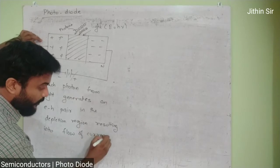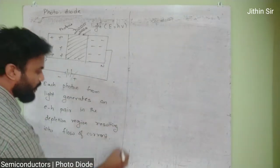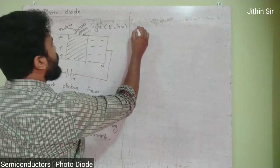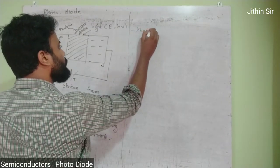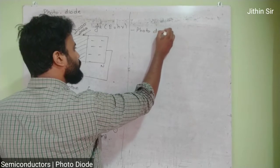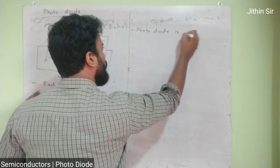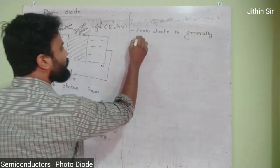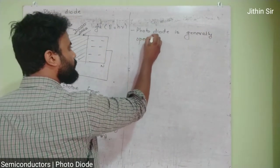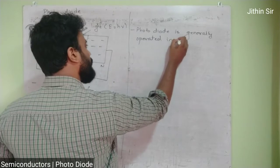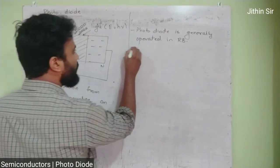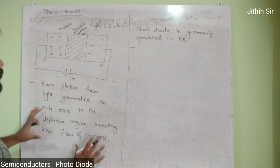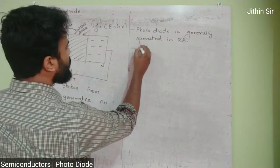تب تک current flow نہیں ہوگی کیونکہ وہ reverse bias میں ہوتی ہے۔ Photo diode is generally operated in reverse biased (RB) condition — یہ ایک پہلا point ہے۔ یہ دوسرا point ہے۔